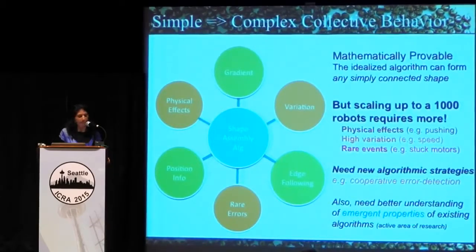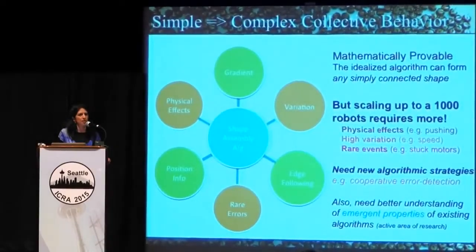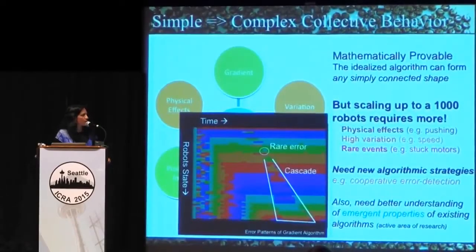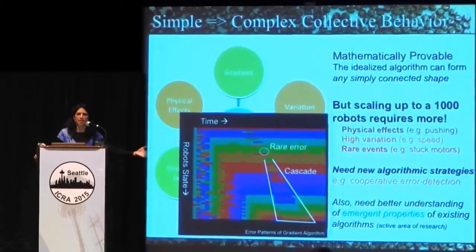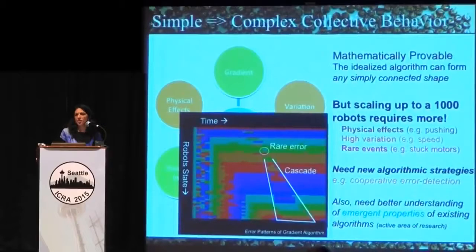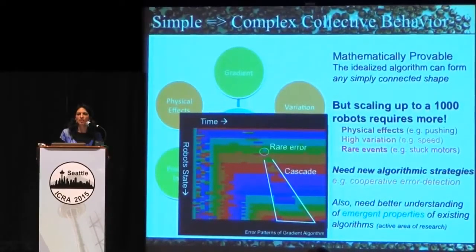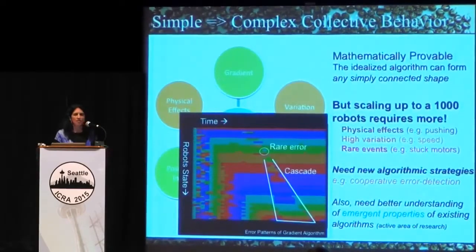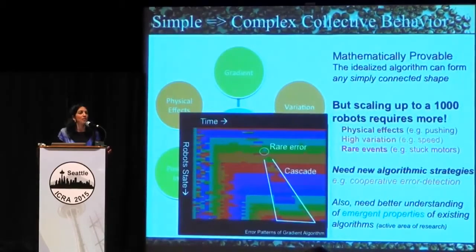We also have a lot to understand about emergent properties of existing algorithms. Many things about the algorithms we thought we understood really well turn out to have very specific error patterns. Some programs are very sensitive to rare errors — a rare error turns into a cascade. Some cases, rare errors just get absorbed. Understanding which algorithms are going to amplify small errors is something we still don't fully understand, in part because our simulators aren't capturing all the physical things happening. Now that we have the thousand-robot system, we can run experiments with ten, a hundred, a thousand robots and try to uncover what we didn't mathematically model.